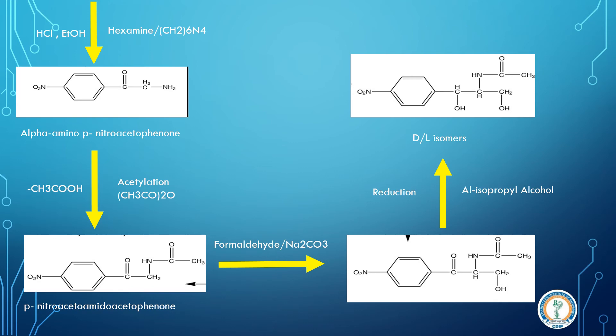Now what we have to do is obtain a base structure of chloramphenicol. So moving further, the dextro and levo mixture isomers, we will carry out the acid hydrolysis.